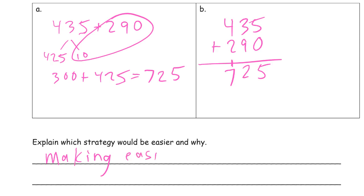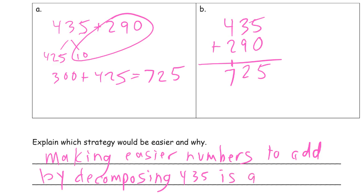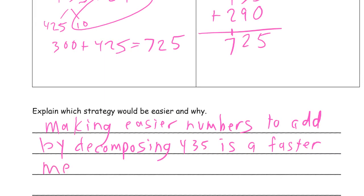I think making easier numbers to add by decomposing 435 is a faster mental strategy. Maybe you have a better way to explain it, too.